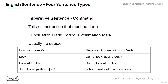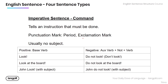The third type of sentence is the imperative sentence — this is a command. It's a sentence that gives an instruction that must be done. The punctuation mark can be a period or an exclamation mark. Usually there's no subject, but there can be. In the positive form, it's just the base verb. For example, 'Look' — you're telling them to look. The subject is obviously implied. You can also add extra information: 'Look at the board.'